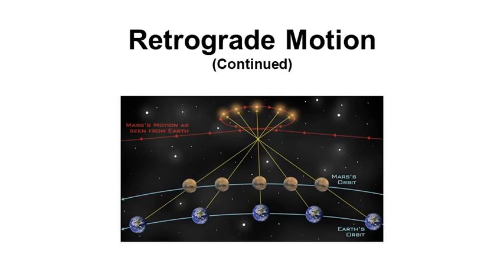Retrograde motion is caused by differences in the orbiting speed. Astrologers place great emphasis on planets in retrograde motion.